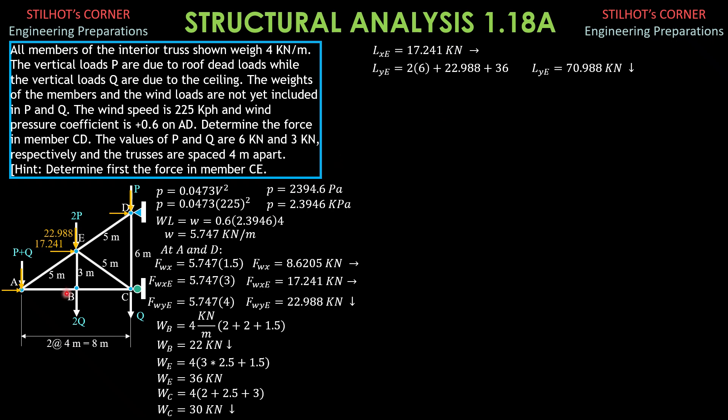Then at B, only vertical loads 2Q, so 2 times 3 plus gravity load at E which is at B which is 22 kN, so that's 28 kN downward. Then at C, we have Q which is 3 kN plus WC 30, so 33 kN downward.